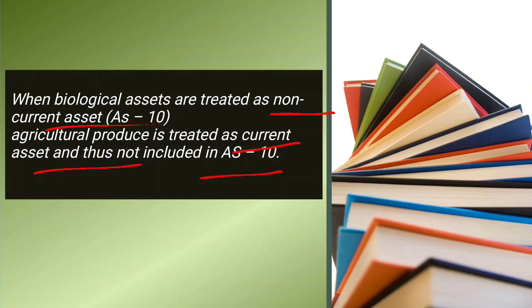For example, a mango tree or coconut tree has a harvesting time of more than one year — more than 12 months — so it is recognized under AS10. Whereas sugarcane has a shorter harvesting period of less than 12 months, so it is treated differently.